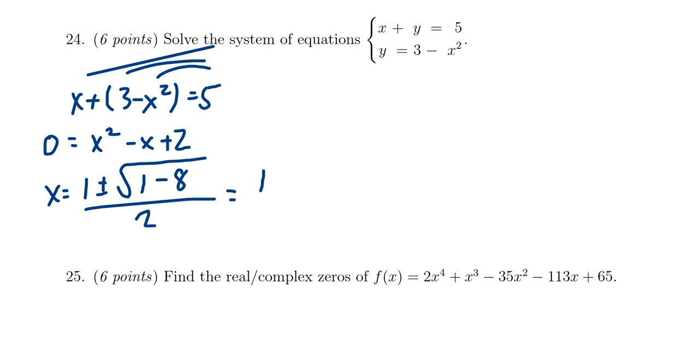Simplifying this, you'll notice you get 1 plus or minus the square root of negative 7 over 2. Or better yet, 1 plus or minus i root 7 over 2.